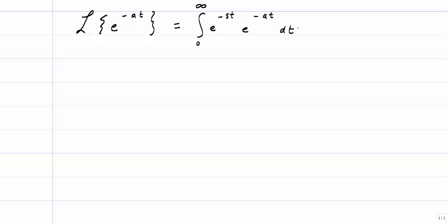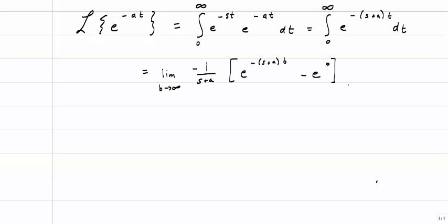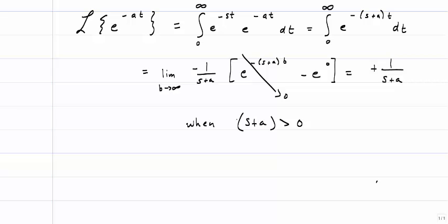Now let's find the Laplace Transform of e to the negative at. We set up the definition again: that's the integral from 0 to infinity of e to the negative st — that's our kernel — times our f of t, which is e to the negative at, all dt. We're going to use exponent rules to combine this, and then do the integration. As b goes to infinity, the term e to the negative (s plus a) to the b power goes to 0, and we're left with 1 over s plus a. We need s plus a to be greater than 0. So the Laplace Transform of e to the negative at is equal to 1 over s plus a, as long as s plus a is greater than 0.